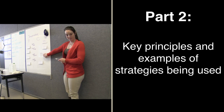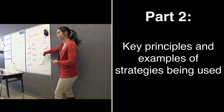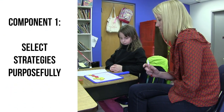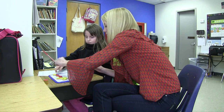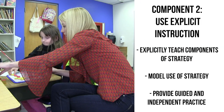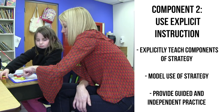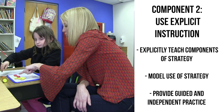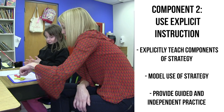Part 2: Two key principles of teaching cognitive and metacognitive strategies. There are two key components of this HLP for teachers to consider. Component one is to select strategies purposefully. Component two revolves around the components of explicit instruction — first, teachers should explicitly teach the components of the strategy, and also model use of the strategy and provide guided and independent practice opportunities for students.